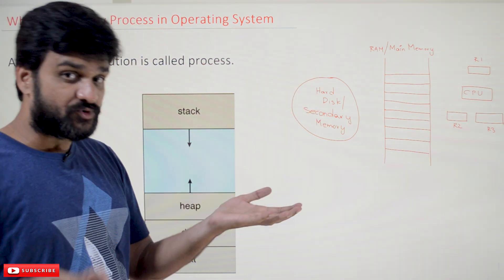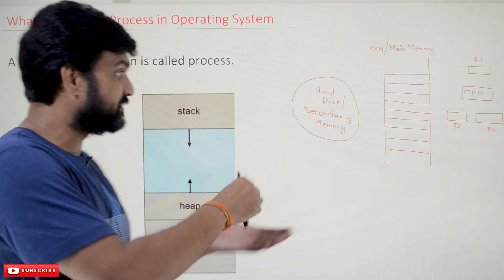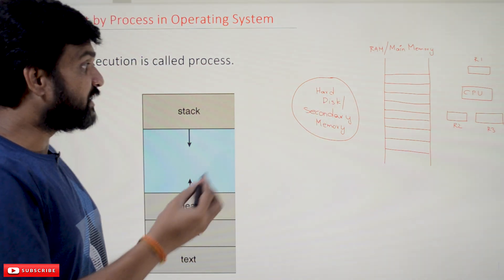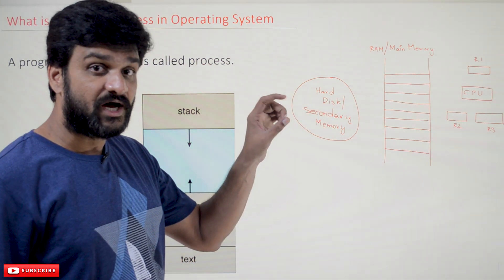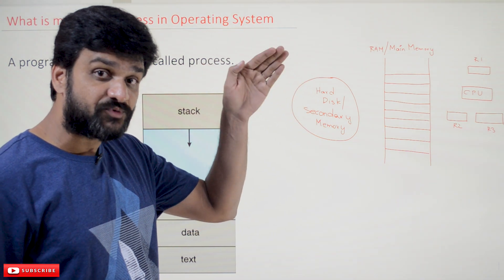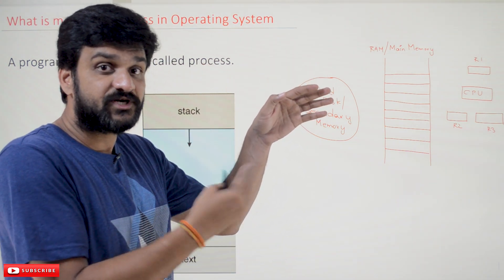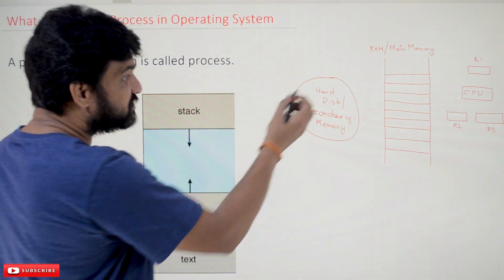The program will be stored on the hard disk in a file. Whenever we want to execute it, we will compile that program so it gets converted into bytecode—it gets converted into machine-level language. Once it's converted and you want to run that program, the program will be shifted from hard disk to main memory.